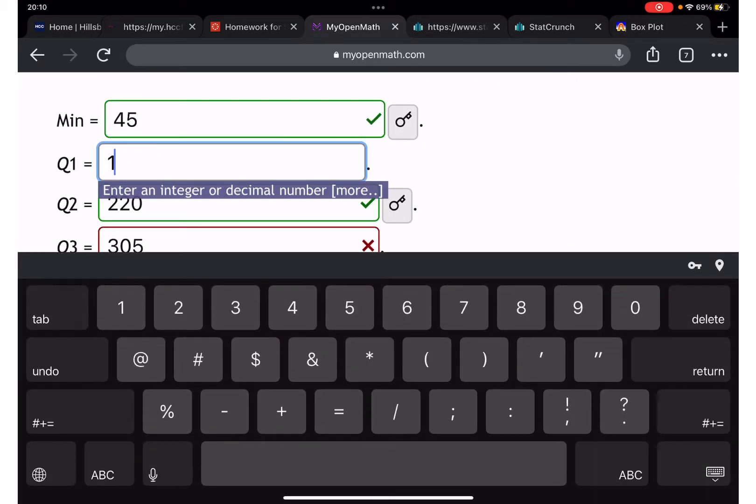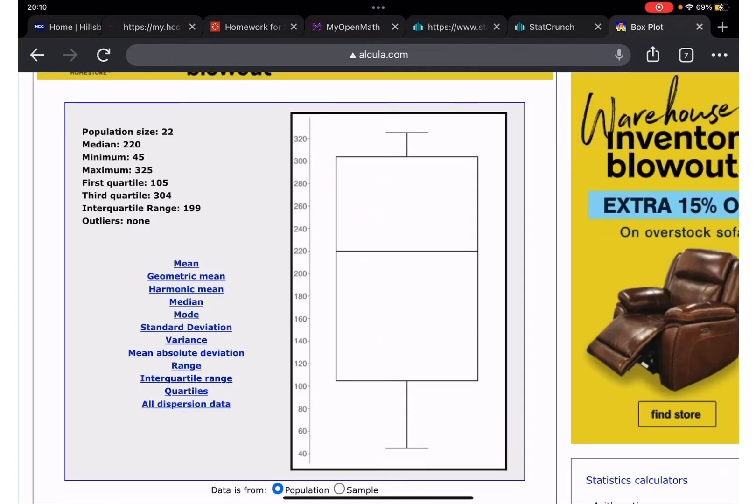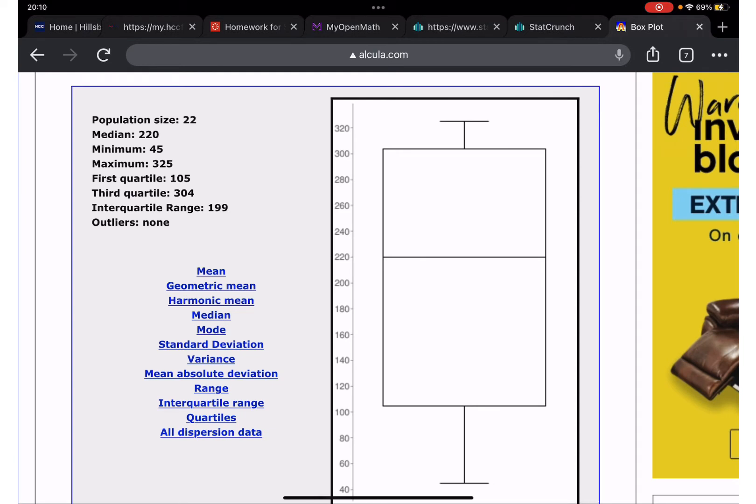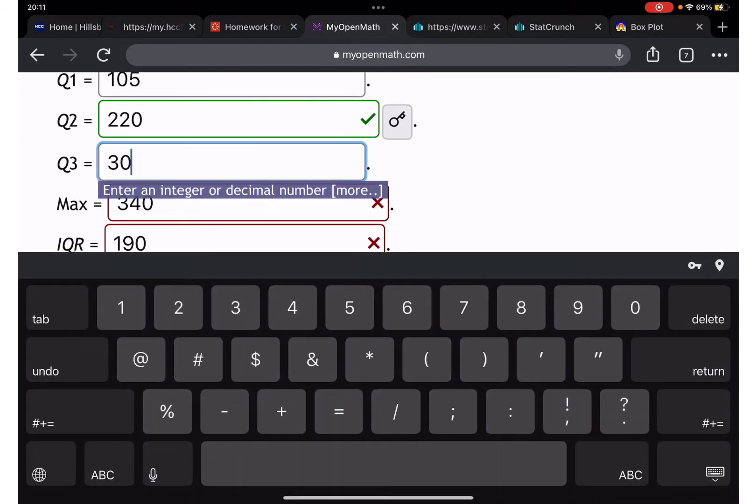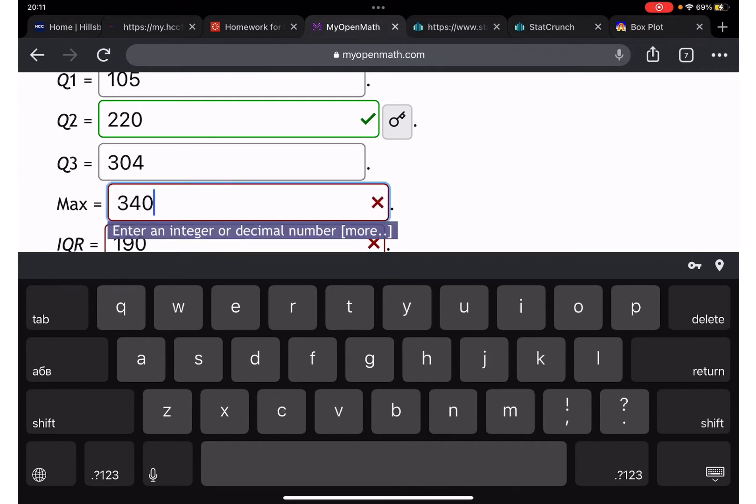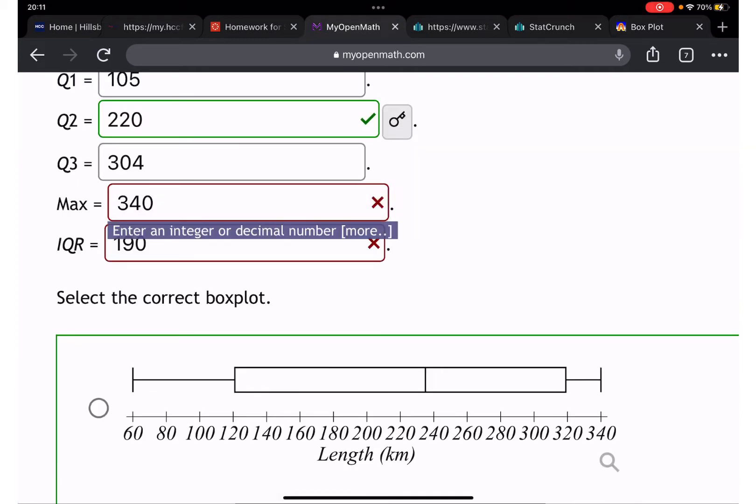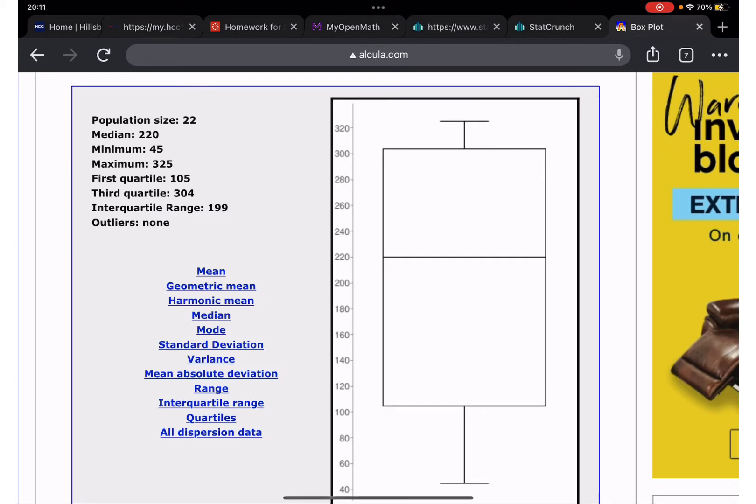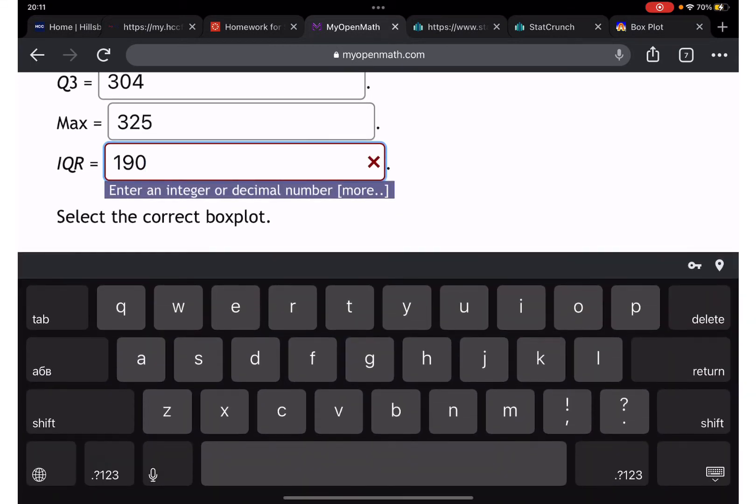Minimum 45, first one is 105. Q3, let me see - first quartile 304, well go figure. 304, and then maximum.